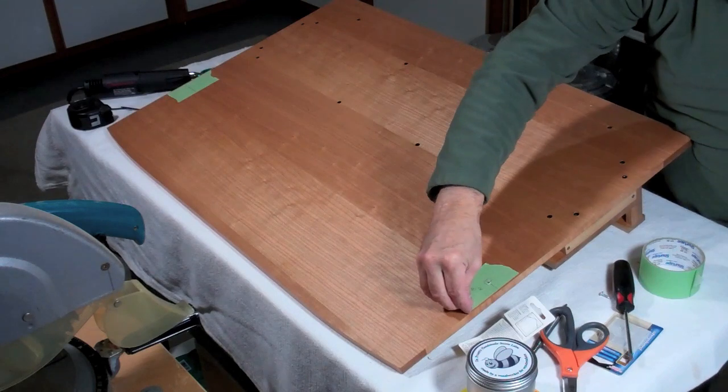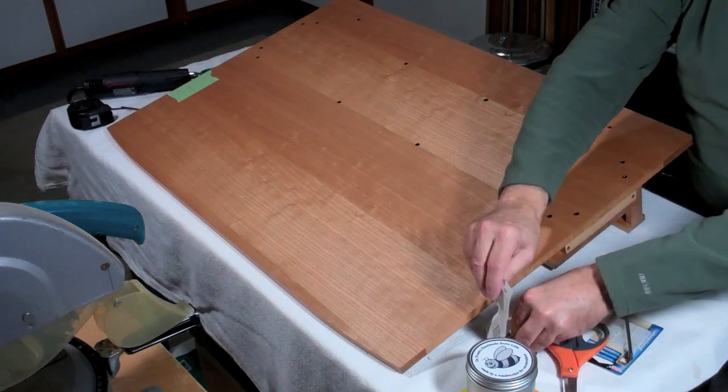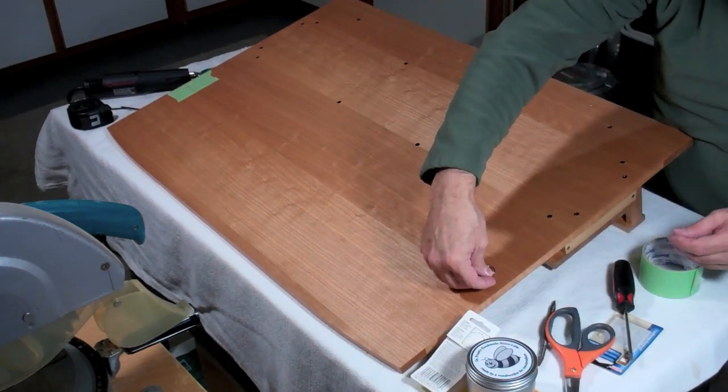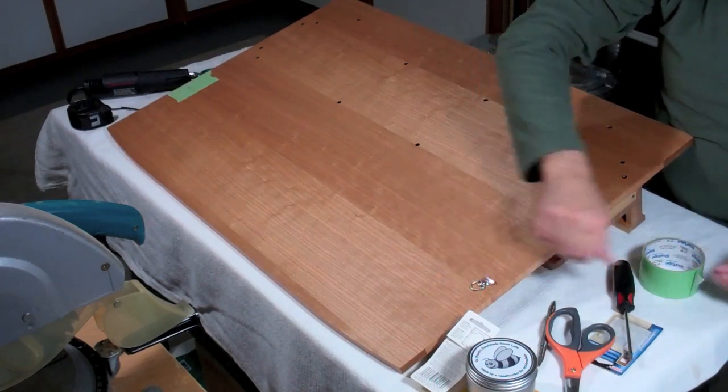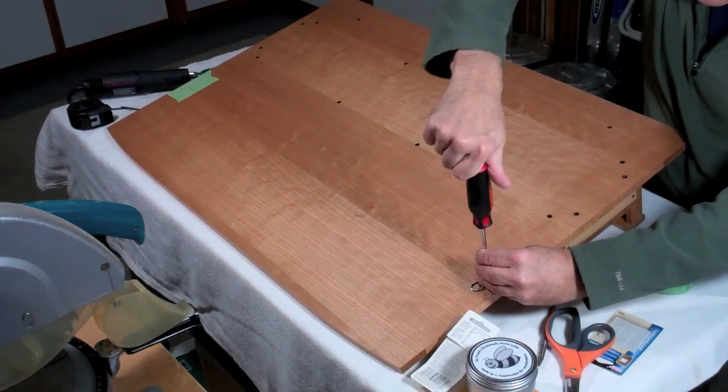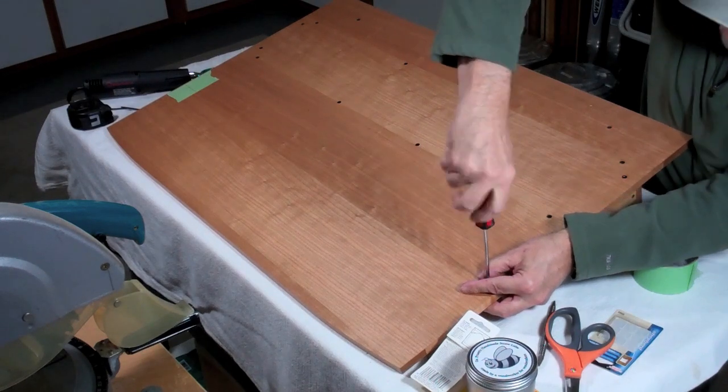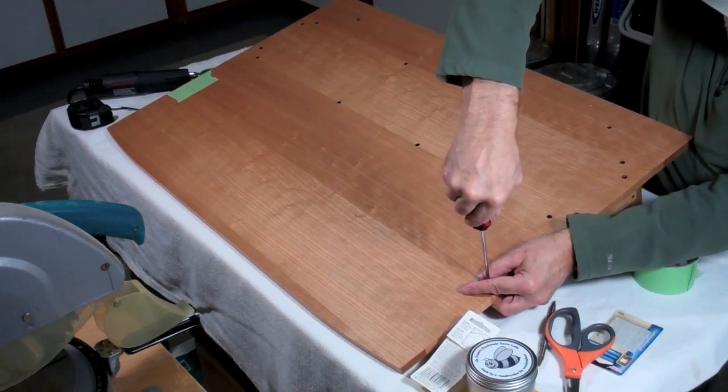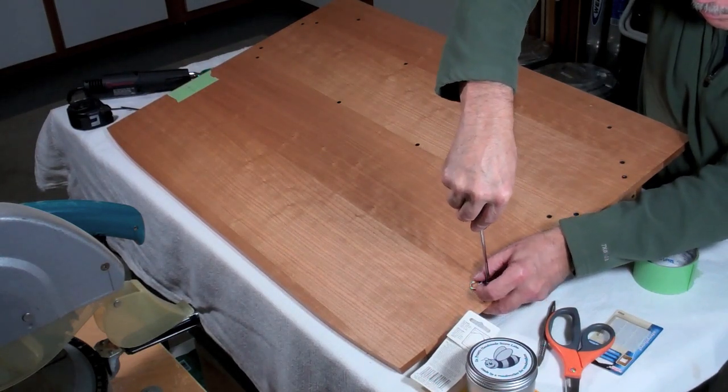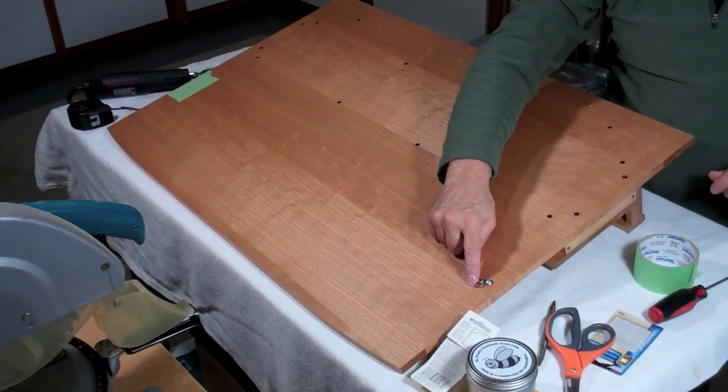And I won't run it all the way, just far enough to get the thread set. Now we'll take the tape off. And we'll mount the first hook. I'll leave this hook a little bit loose so that it can swing in with the angle of the wire. Alright, we're set. I'll do that on the other side and then we'll put the wire on.